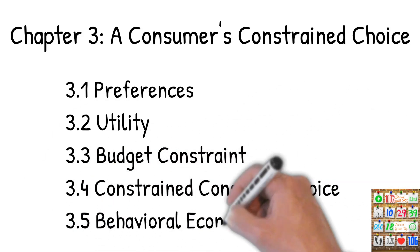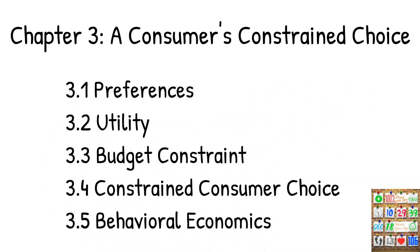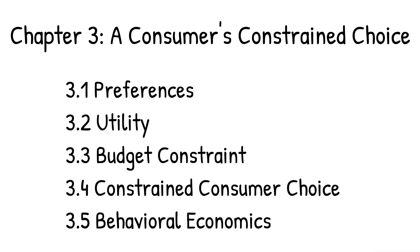In this chapter, we examine five main topics: the preferences, utility, budget constraint, constrained consumer choice, and behavioral economics.